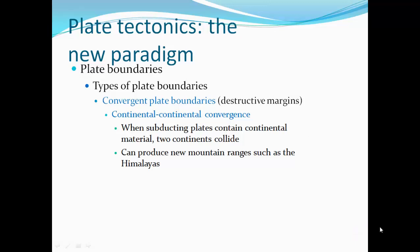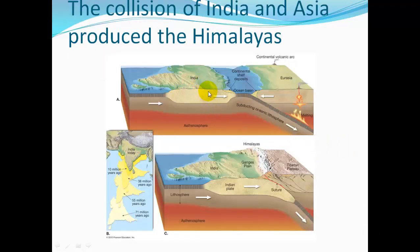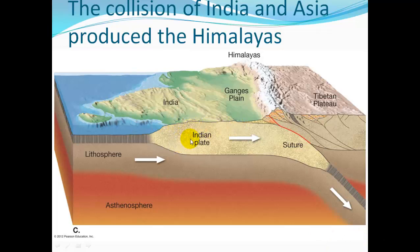Continental-continental convergence is a bit different because neither side of the plate will subduct — they push against each other and collide, forming new mountain ranges such as the Himalayan Mountains. As India pushed into Eurasia millions of years ago and ran out of subducting crust, India pushed against Eurasia, lifting up rock to form the Tibetan Plateau, and on top of that, the Himalayan Mountains. Today India is still pushing northward, continuing to push up those mountains.